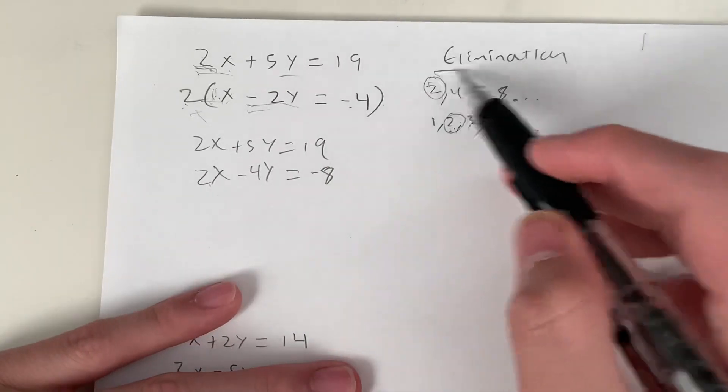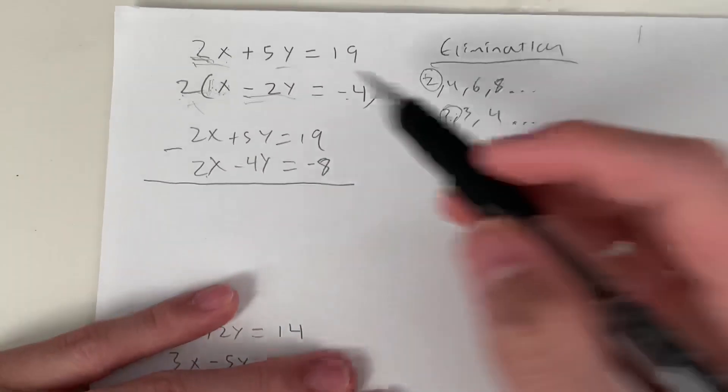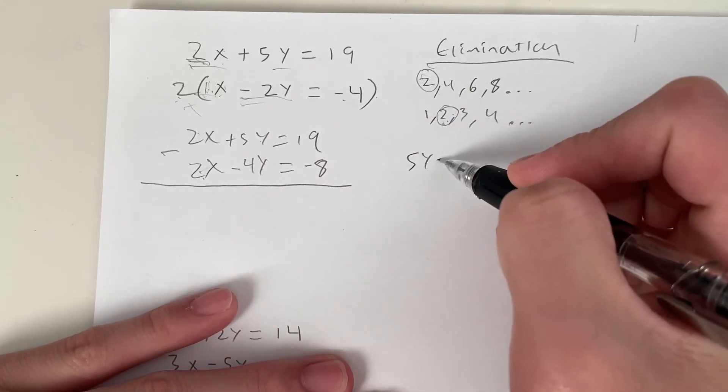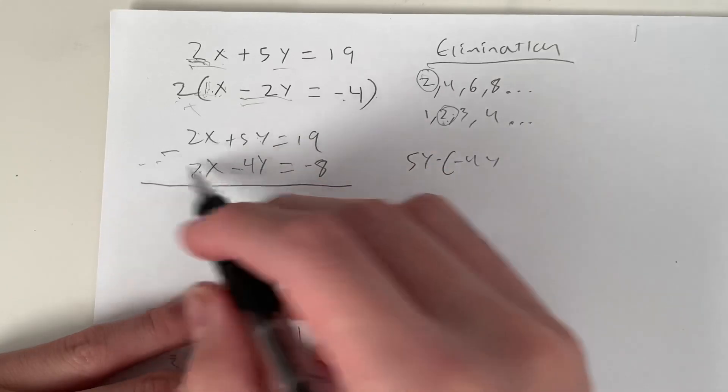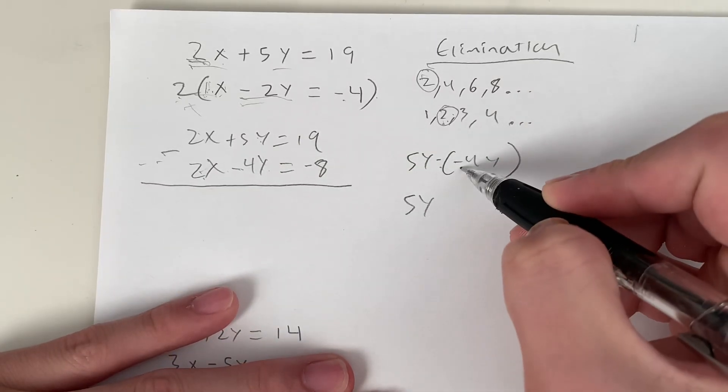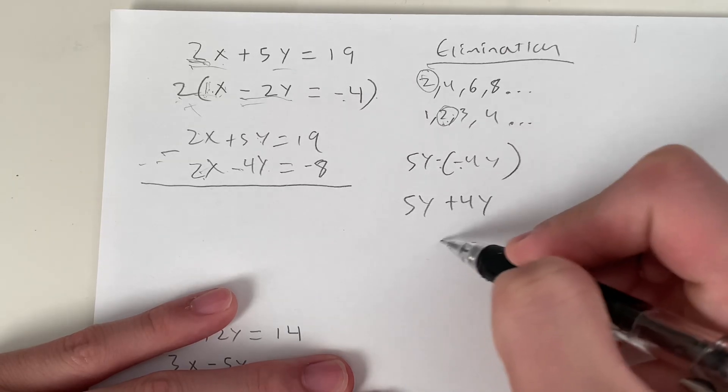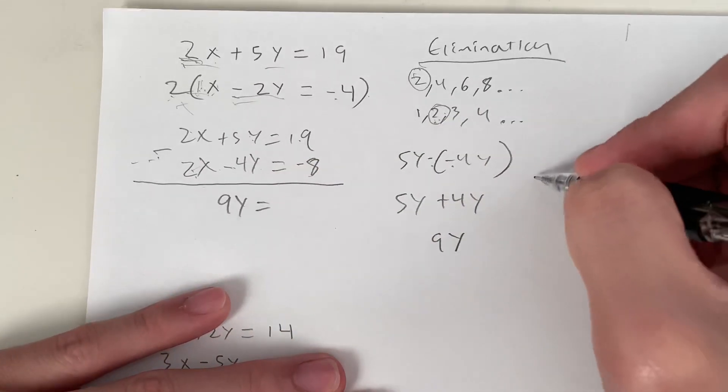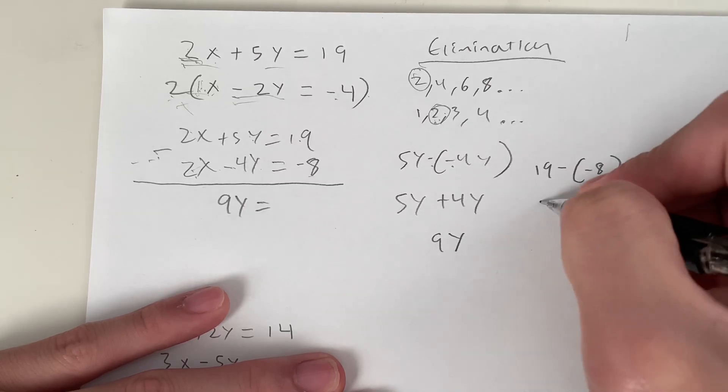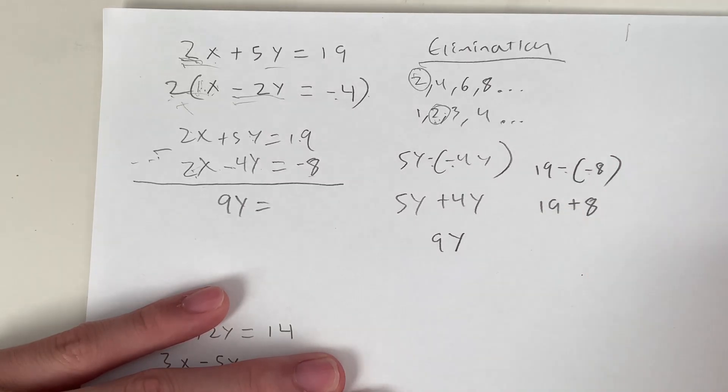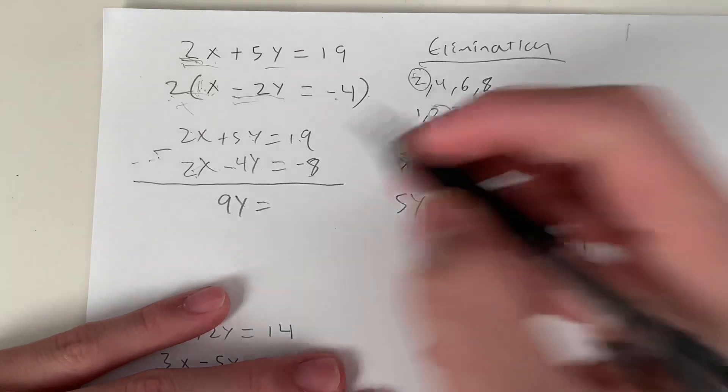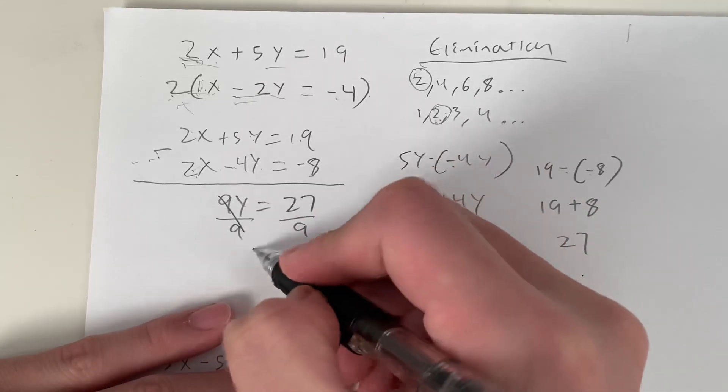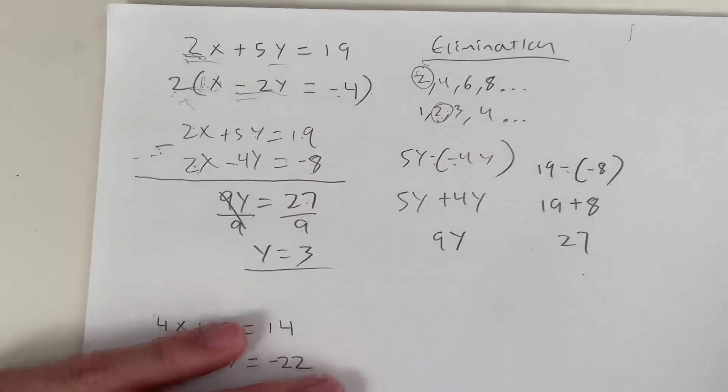Now that we have 2x and 2x, this is why it's called elimination, because now we just subtract. What's 2x minus 2x? That's 0. So 5y minus negative 4y. Remember, you have to subtract through with every single sign. So 5y, negative negative makes a positive, so it's going to be plus 4y. That's equal to 9y. So we have 9y equals 19 minus negative 8. That's 19 plus 8. What's 19 plus 8? That's 27. So 9y equals 27. Divide both sides by 9. Y equals 27 over 9, which is 3. So the value of y is 3.